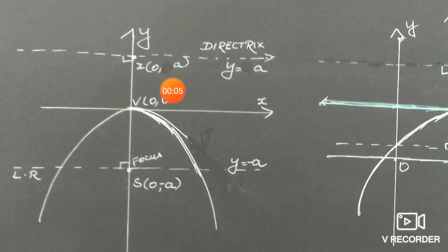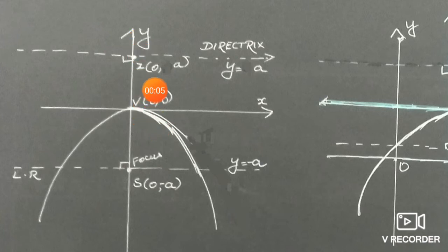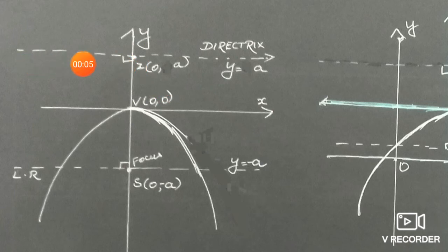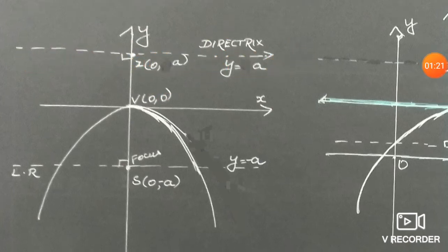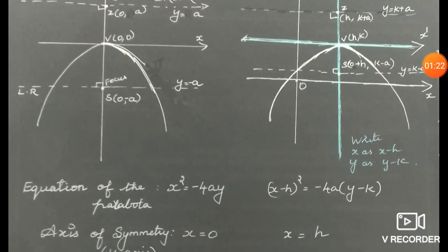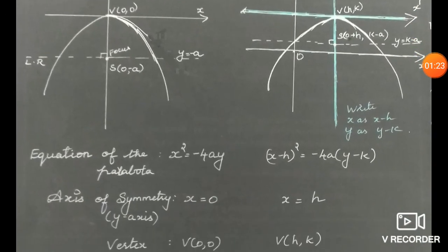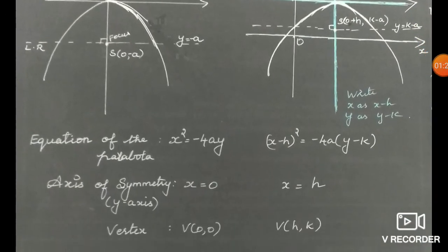The directrix is y equals minus a — wait, the focus coordinate is (0, -a) and the directrix is on the positive y-axis side. So the directrix is y equal to a, and the coordinate on the positive y-axis is (0, a). That is the directrix.